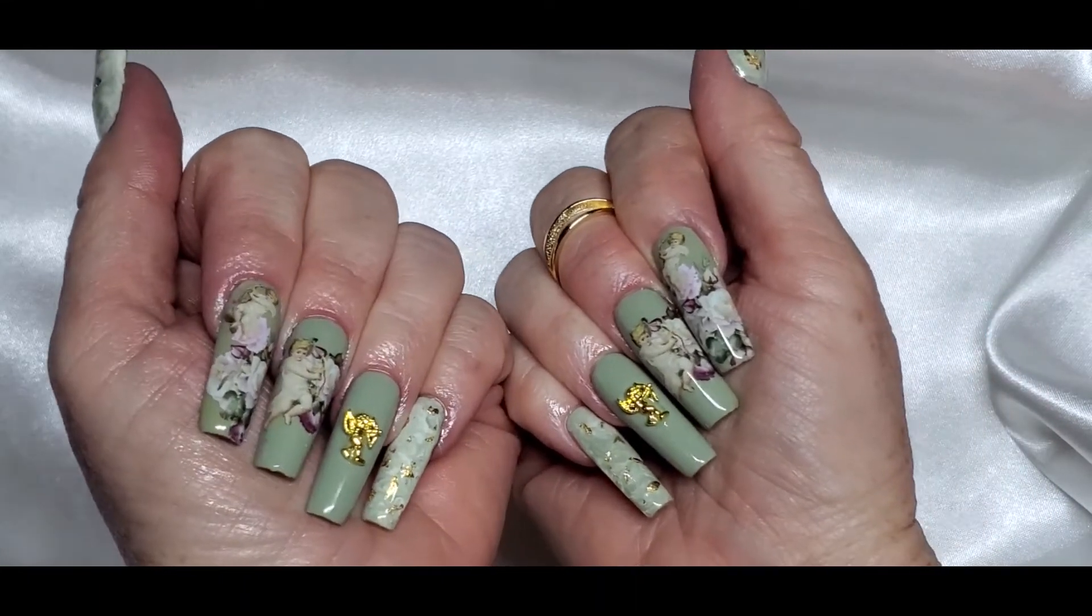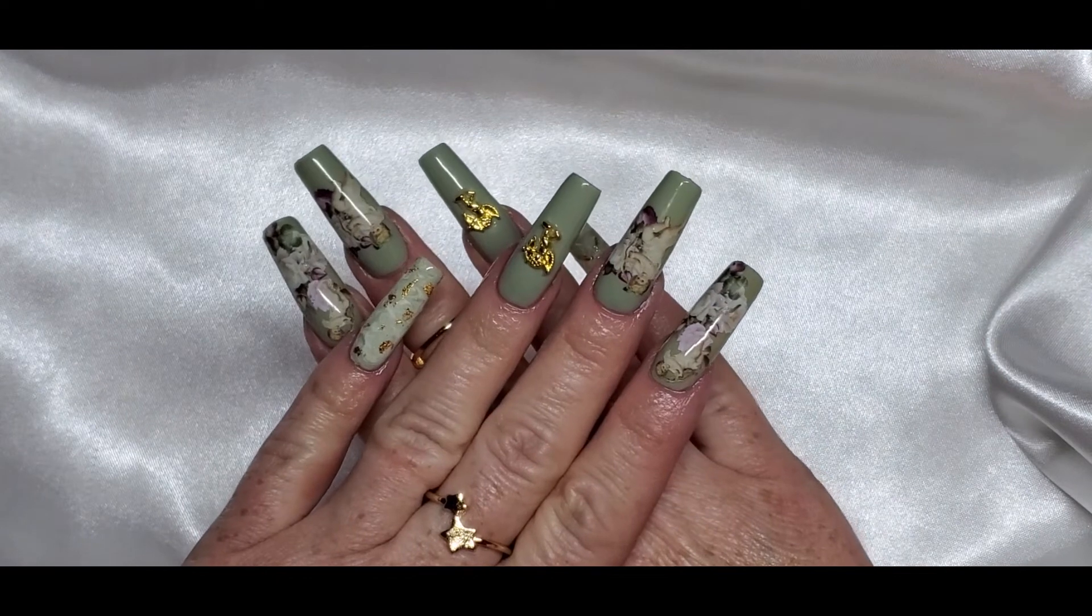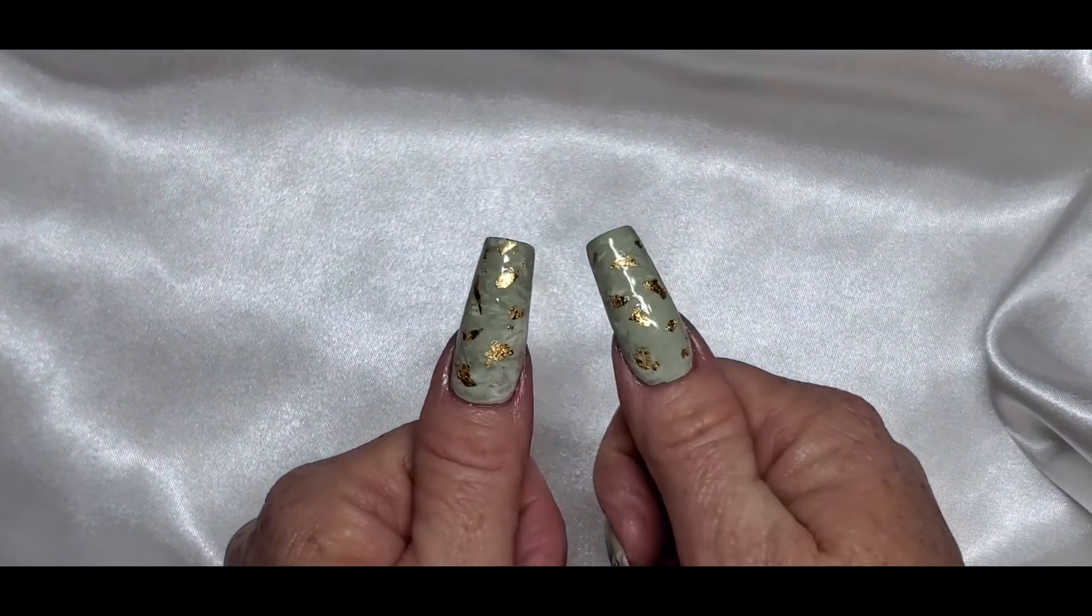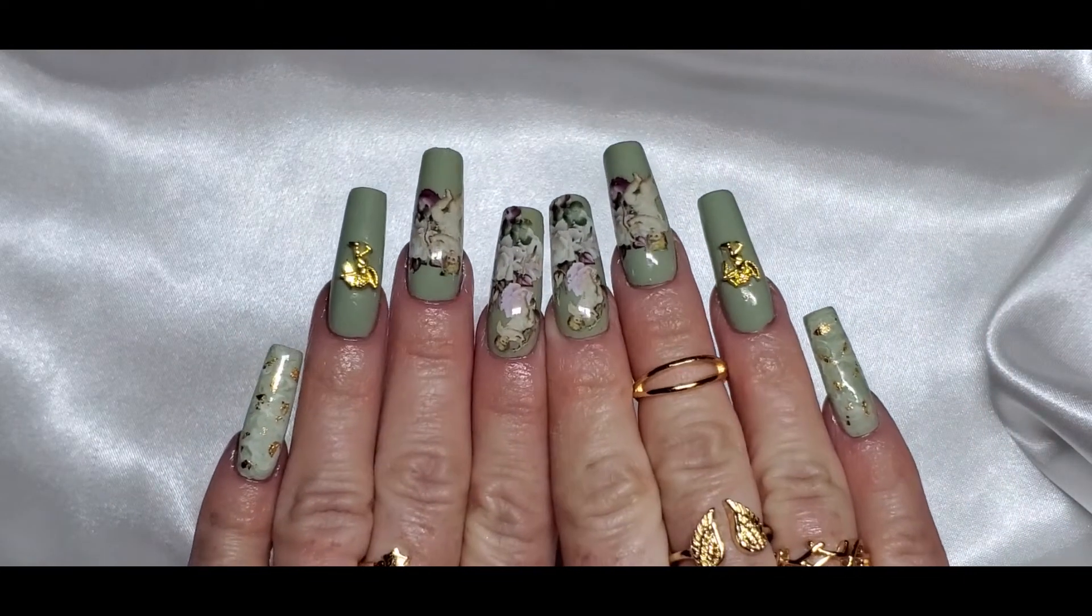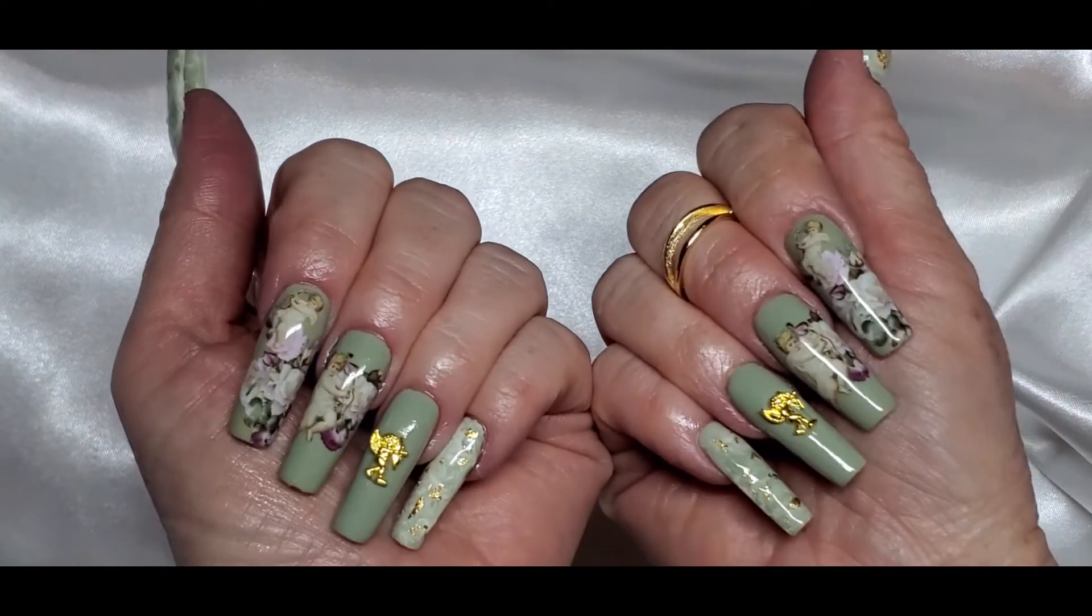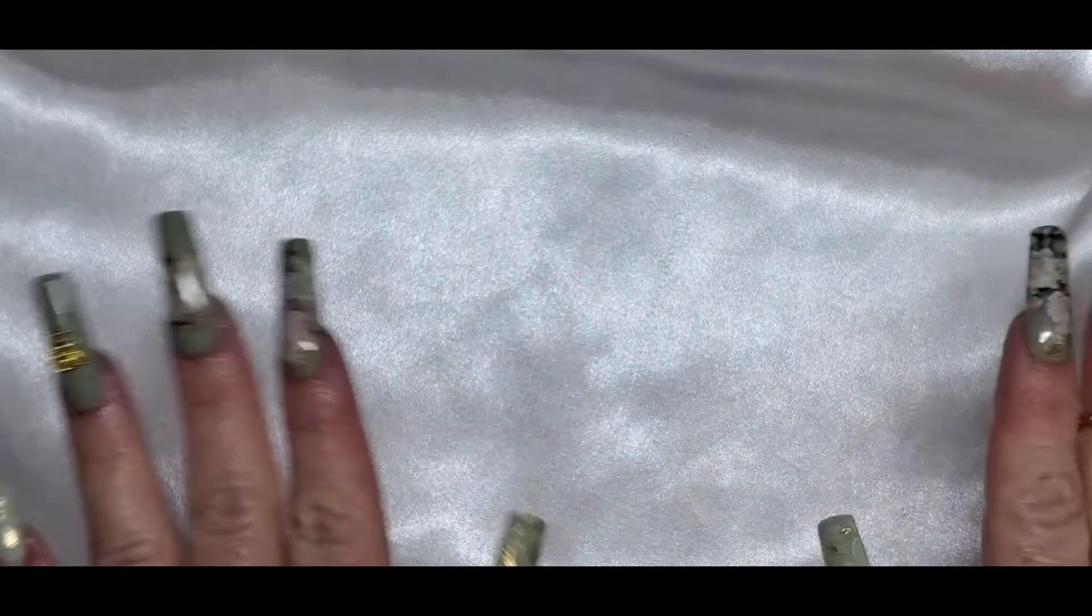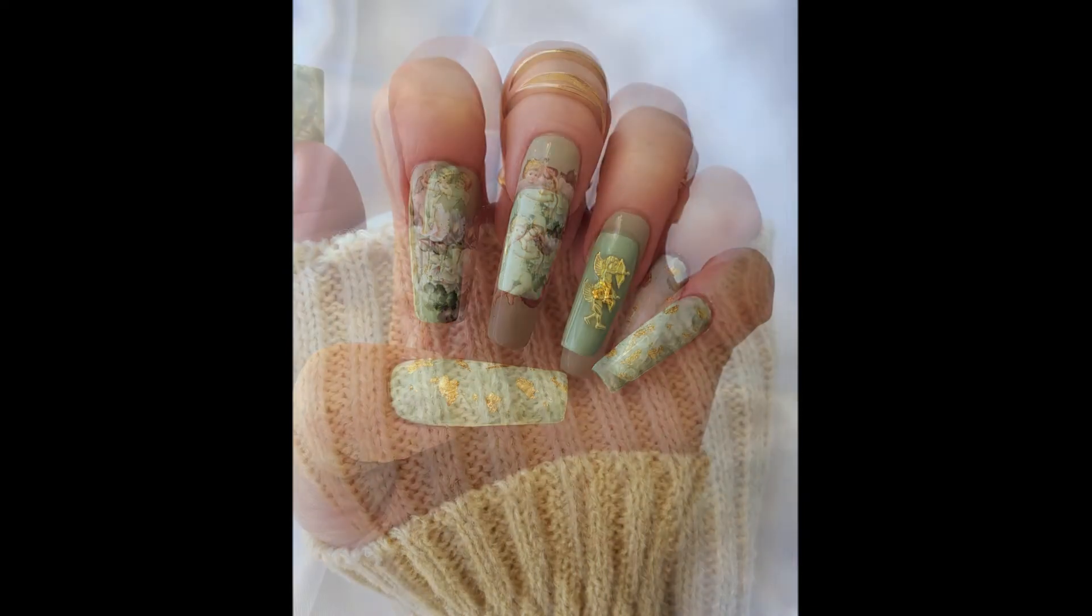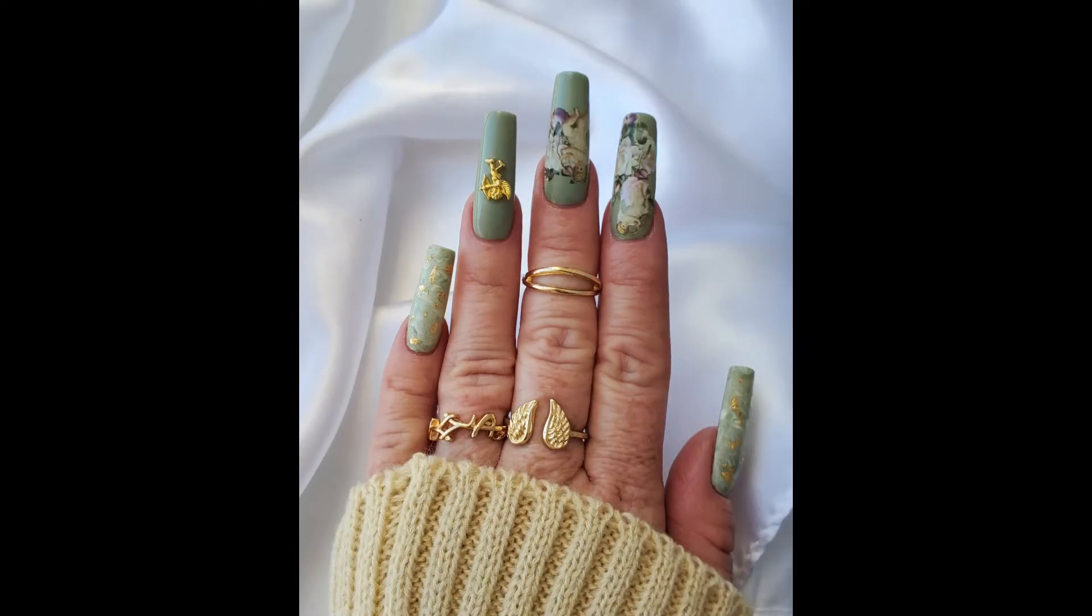This is the finished set here. I think they came out super cute. I love the way the thumb came out on the left hand. It just came out the way I pictured it. I had a lot of fun doing this set. Madame Glam polishes are just amazing. I do have a code, Sandra30_1, if you want to use that code to save 30%. Thank you guys so much for watching. I appreciate all your love and support. See you next time!